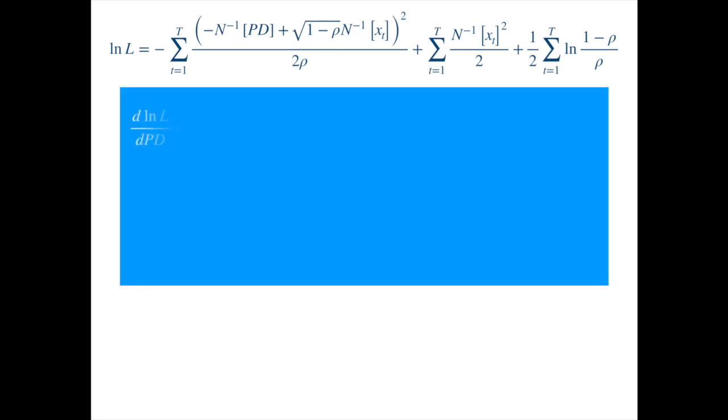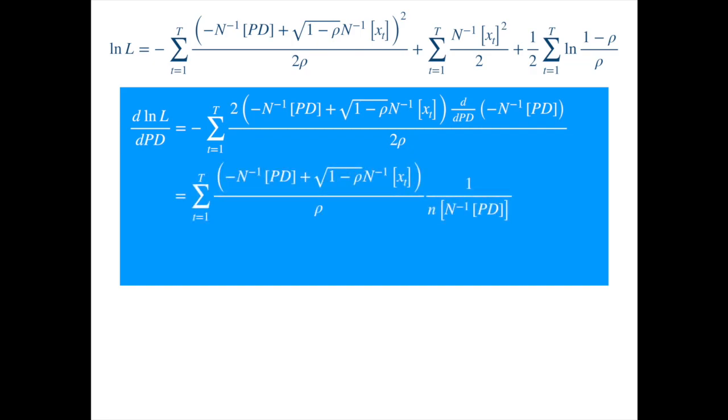Differentiating both sides we get. The second and third terms have disappeared because they do not contain PD. We know the derivative of the inverse normal from the probability density function video, so we get. Taking the constant terms out of the summation we get.